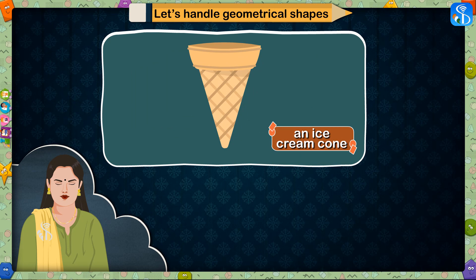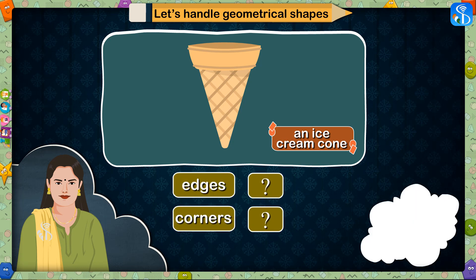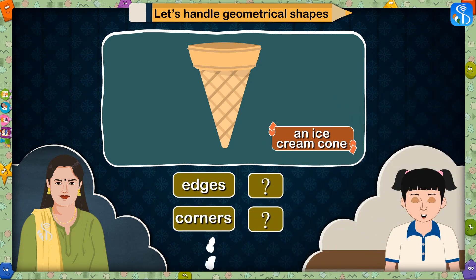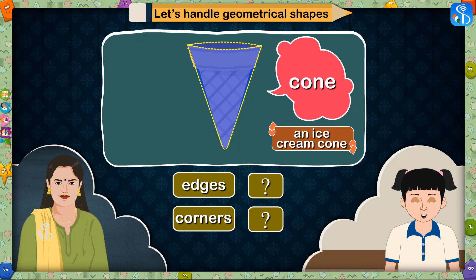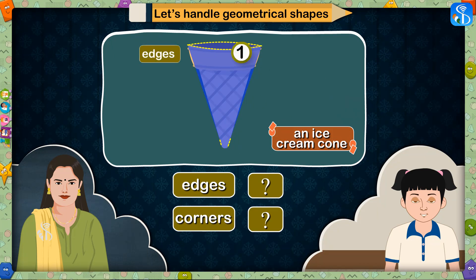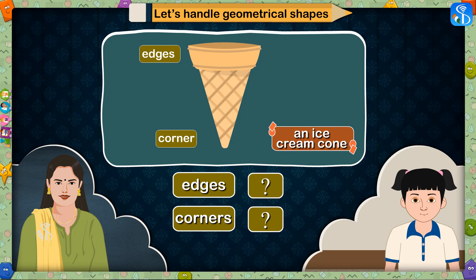This is an ice cream cone. So now tell me what shape is it? How many edges and corners are there? This shape is known as a cone. It has got one edge and one corner. Correct! So from our table's second shape, we will write one edge and one corner.